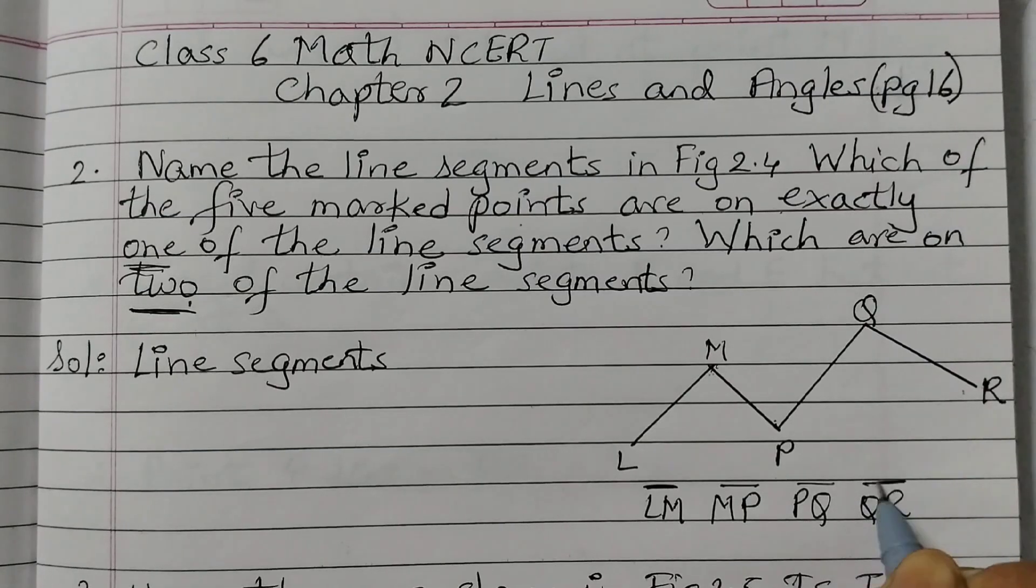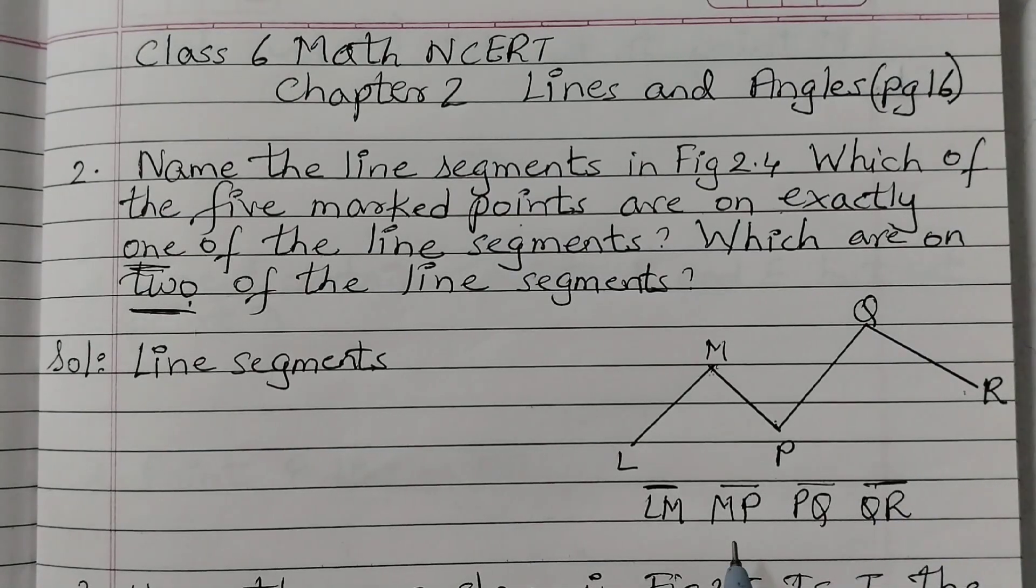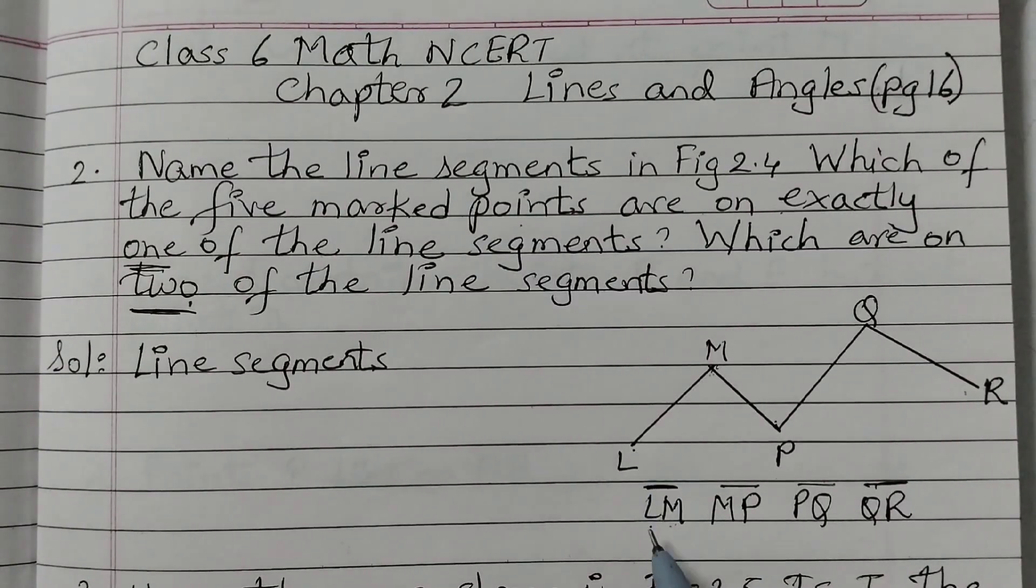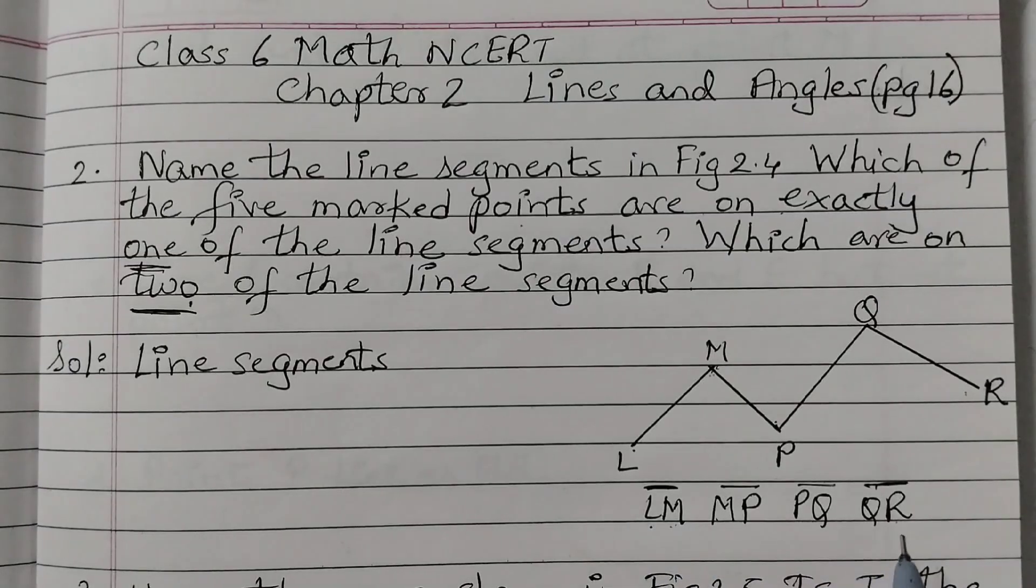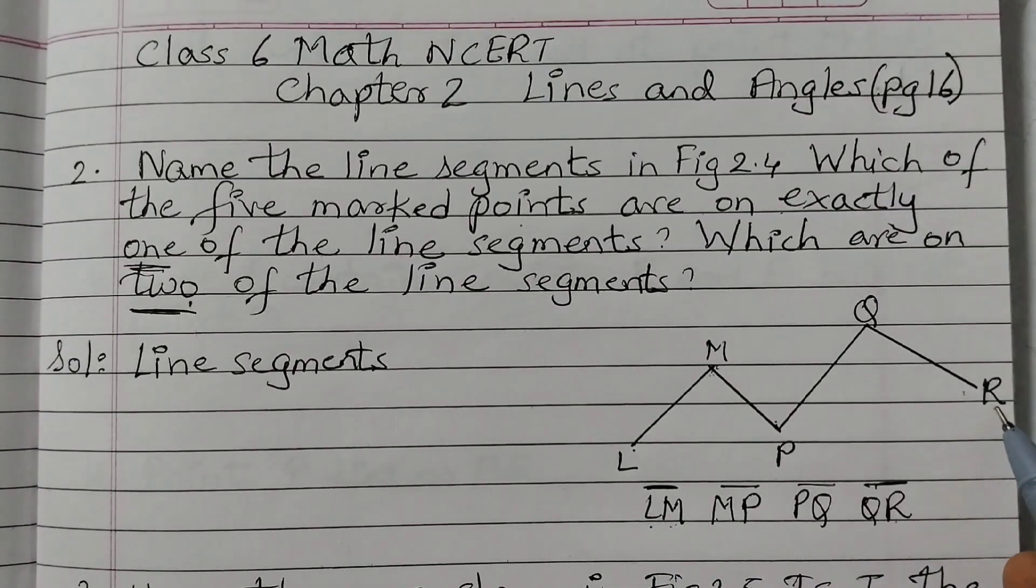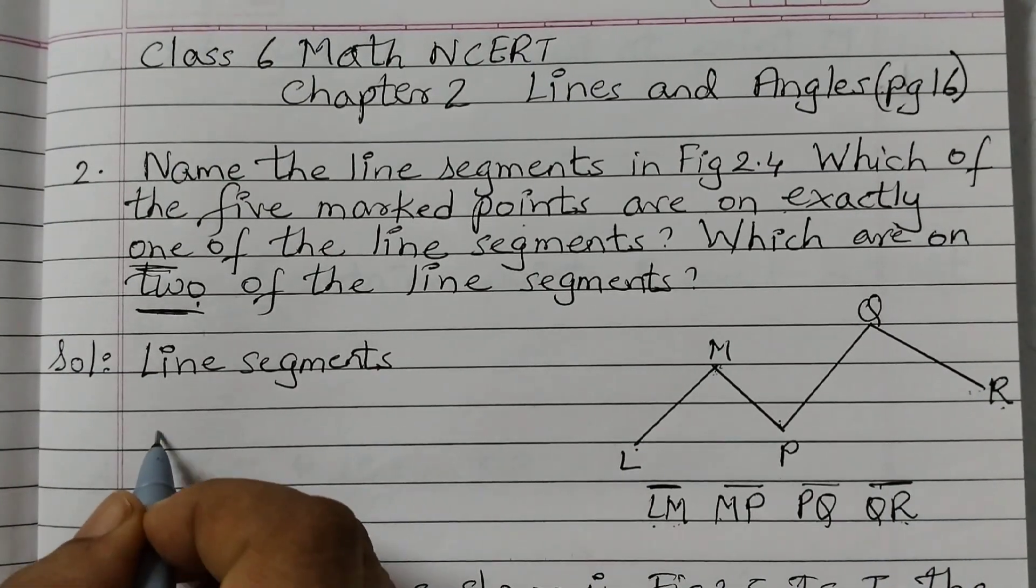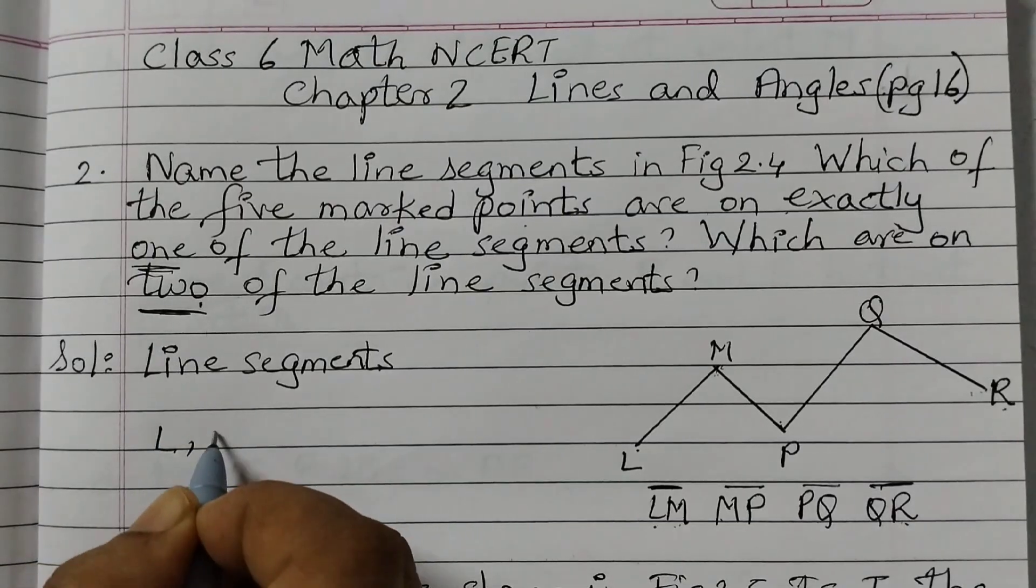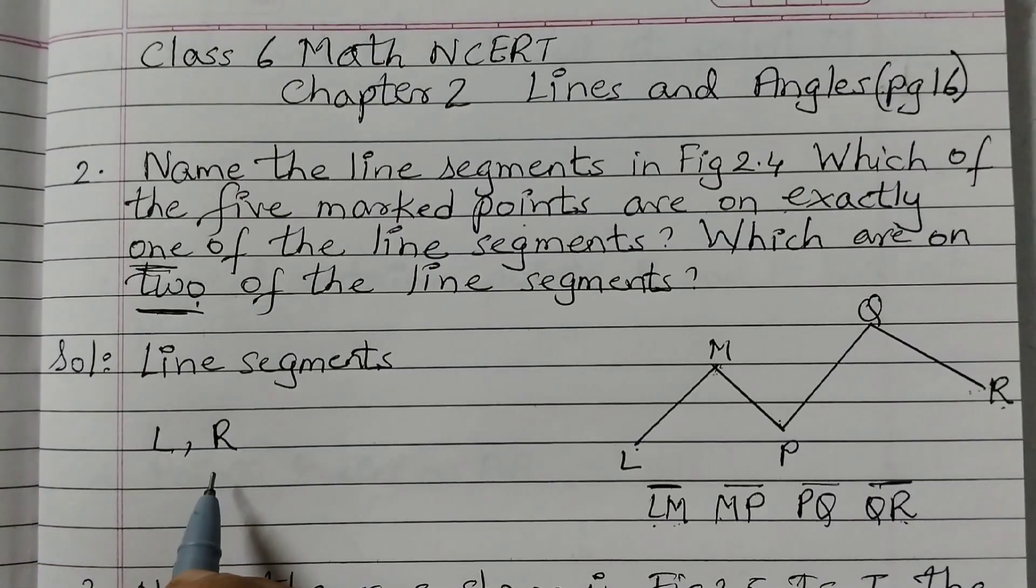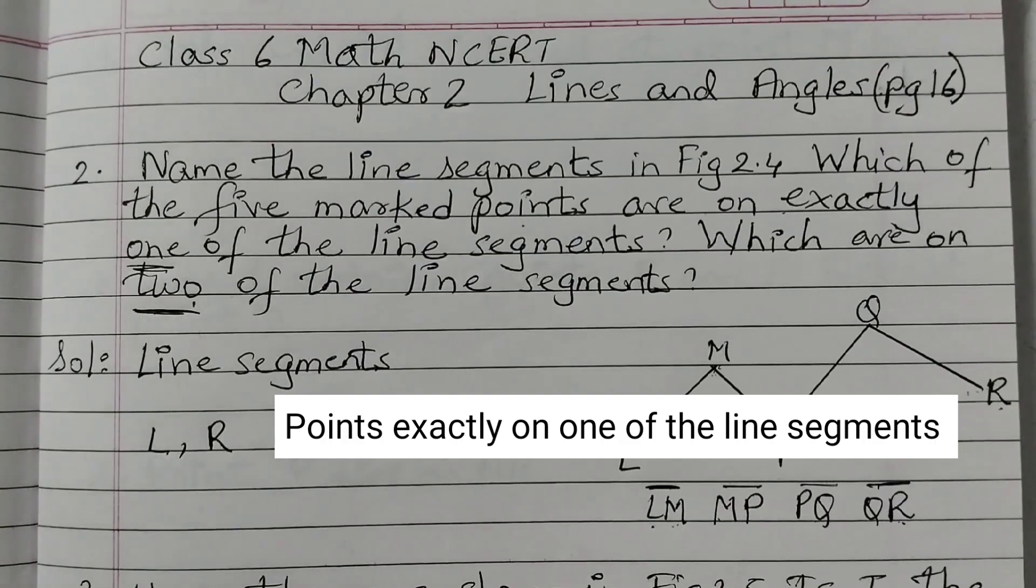So these are the four line segments we have. Now we need to find out which points are exactly on one line segment. Point L is on only this line segment LM. We don't have L anywhere else, right. Similarly, if you see point R, R is only on line segment QR, right. So we can see for the first one the answer is point L and point R. These two points are exactly on one line segment.